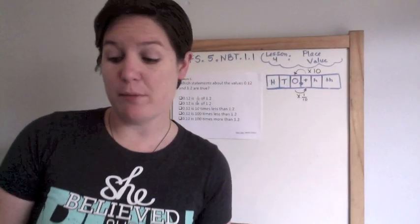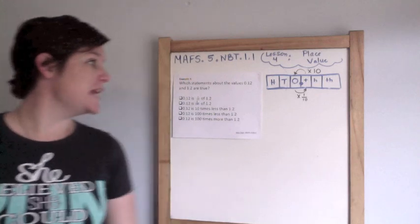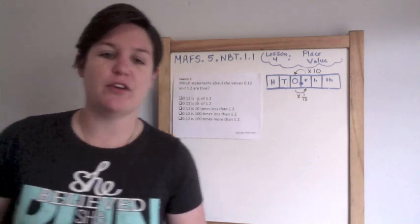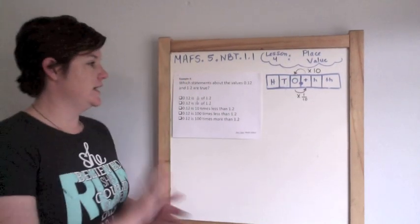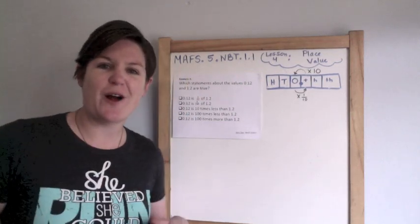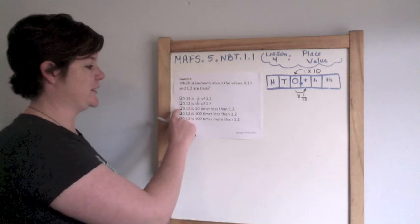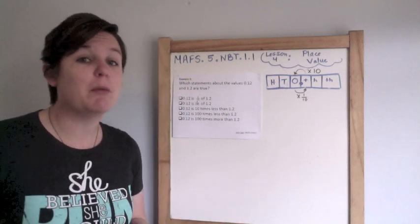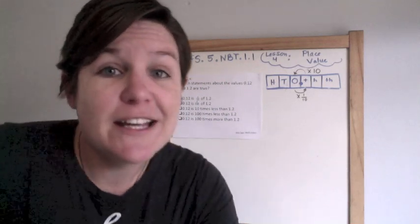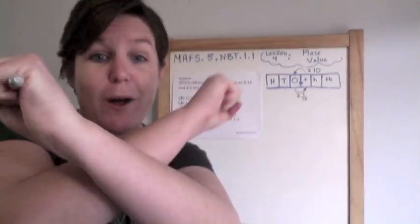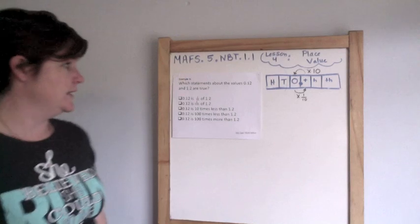We're already on example four! Which statement about the values twelve hundredths and one and two tenths is true? This is a multi-select answer — you can tell because it says 'which statements' and on the computer you'll see little checkbox boxes. For multi-select, you probably need to select more than one answer, and to get it correct you have to mark ALL the correct answers — if you forget one, it's wrong.